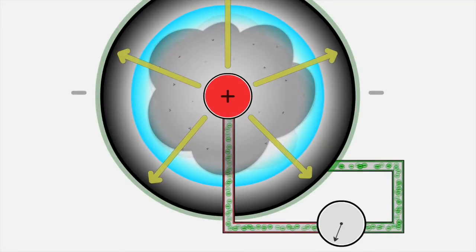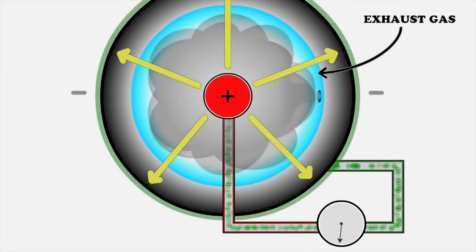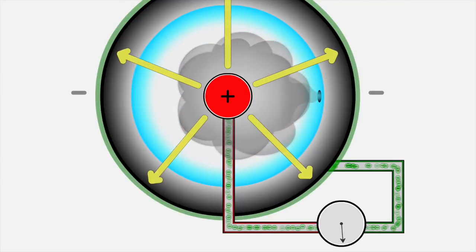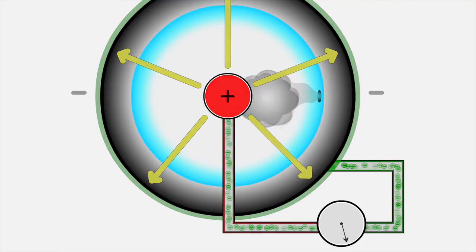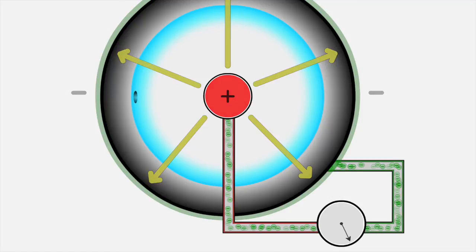Positive ions accelerate outward, recombining with electrons forming neutral helium gas. Helium waste gas represented by gray smoke is exhausted.